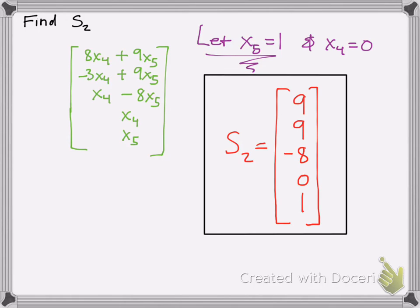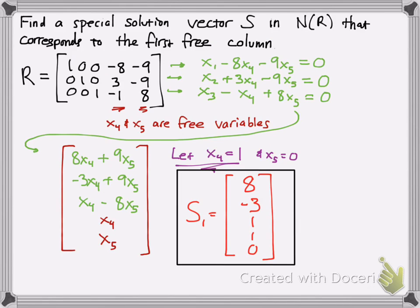And that's it — that's finding the special solutions. Pretty much, you want to row reduce if you need to — and most of the time you will. Then solve for x1, x2, and x3. Set your free variables equal to 0, except for the one you want to solve for. Each special solution corresponds to a free variable, and you solve for each one respectively. I hope that helped — good luck and happy studying. Thank you.